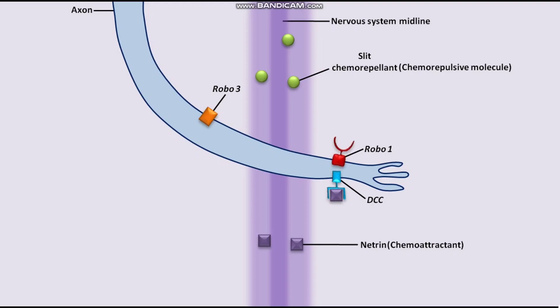Robo1 protein then binds to Slit chemorepellent protein. As a result, the growth cone is forced away from the midline. Robo1 protein bound to Slit chemorepellent blocks DCC protein.